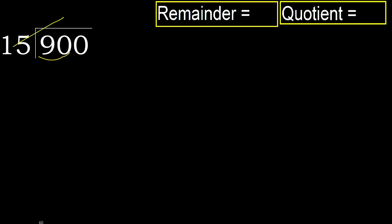15 multiplied by which number is nearest to 90 but not greater? 15 multiplied by 7 is greater, so multiplied by 6 — 90 is not greater.